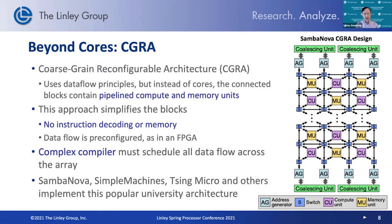Taking the data flow approach to the extreme, there's a newer technique called coarse-grained reconfigurable architecture, or CGRA, which some companies have been using. Instead of having programmable cores, you have blocks of compute and memory on the chip. Using the same data flow principle, each compute unit is pre-configured to execute a specific task, so they don't need to load and decode instructions. The blocks are simpler and you can fit more compute onto the chip. The compiler becomes complex as it has to map each network onto this array as efficiently as possible, but we've seen promising results from companies like SambaNova using the CGRA architecture.